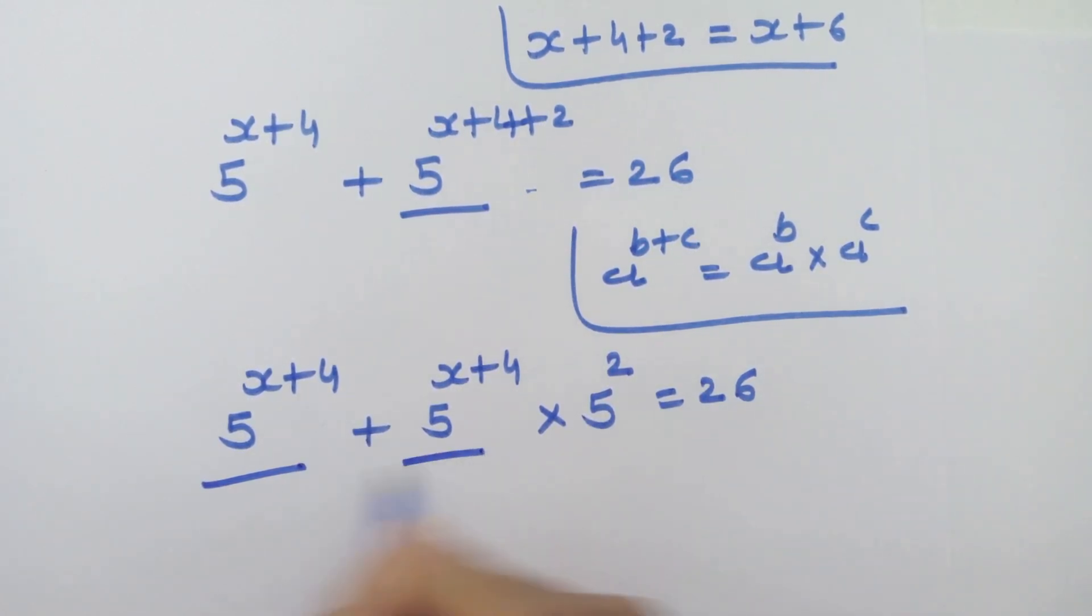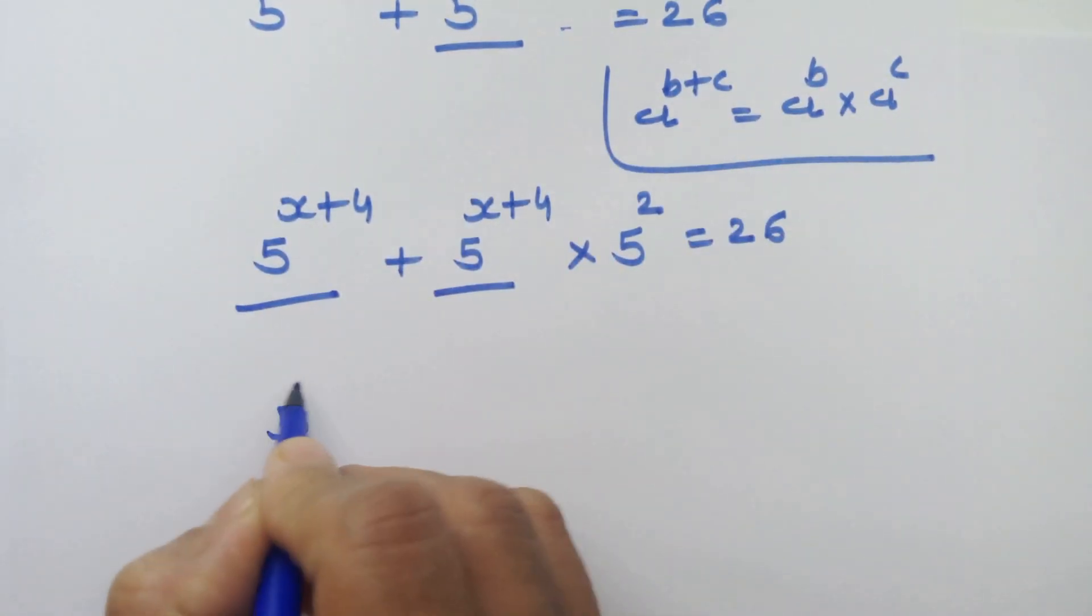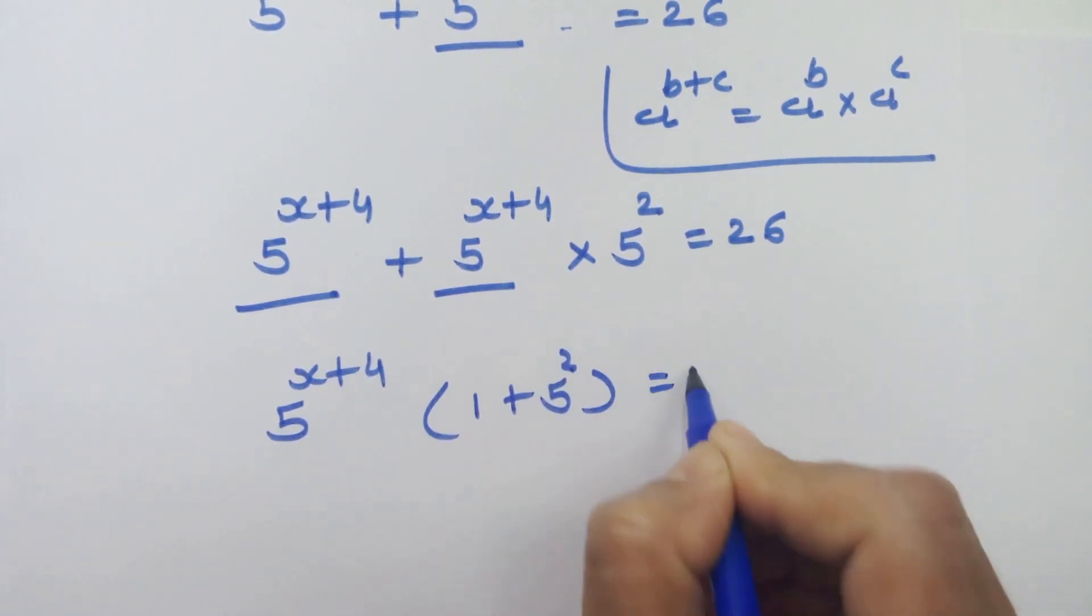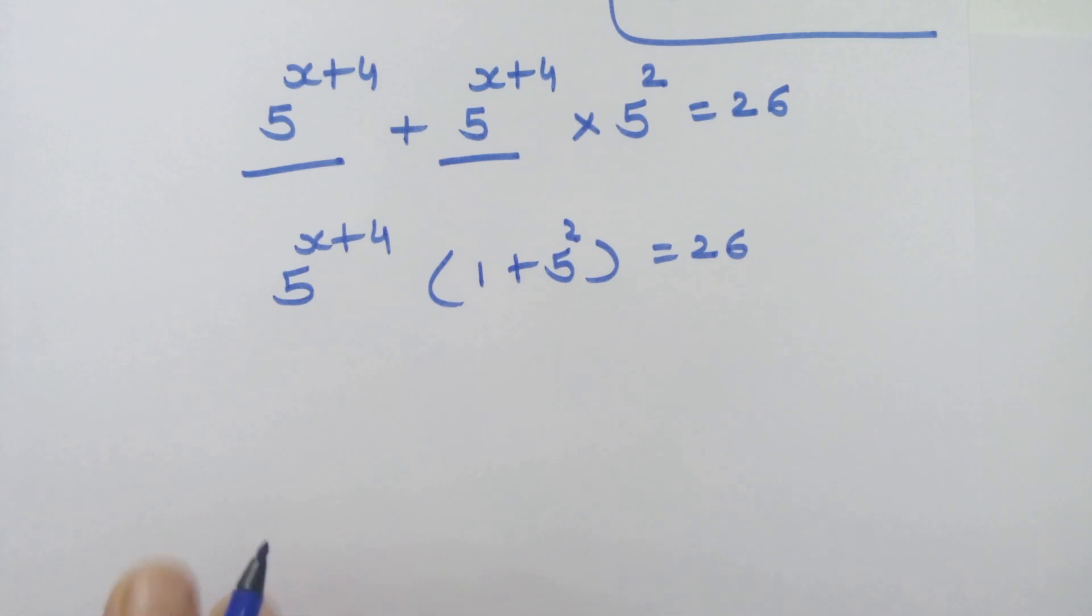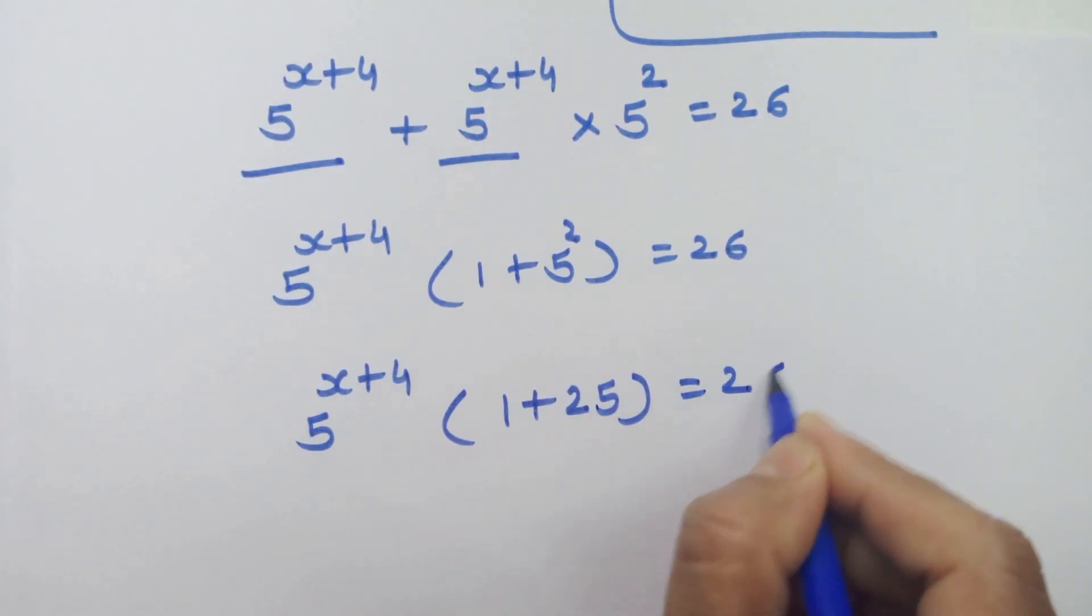Now let's take 5 raise to x plus 4 common from here, into 1 plus 5 square is equal to 26. So next step is 5 raise to x plus 4 into 1 plus 25 is equal to 26.